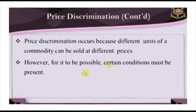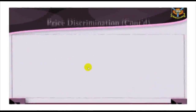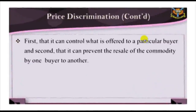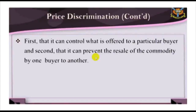Price discrimination occurs because different units of a commodity can be sold at different prices, and it will be profitable for the seller to take advantage of this if he can. For price discrimination to be possible, certain conditions must be present: first, that the seller can control what is offered to a particular buyer; and second, that it can prevent the resale of the commodity by one buyer to another. The first condition — control over supply — is the feature that makes price discrimination an aspect of the theory of monopoly.